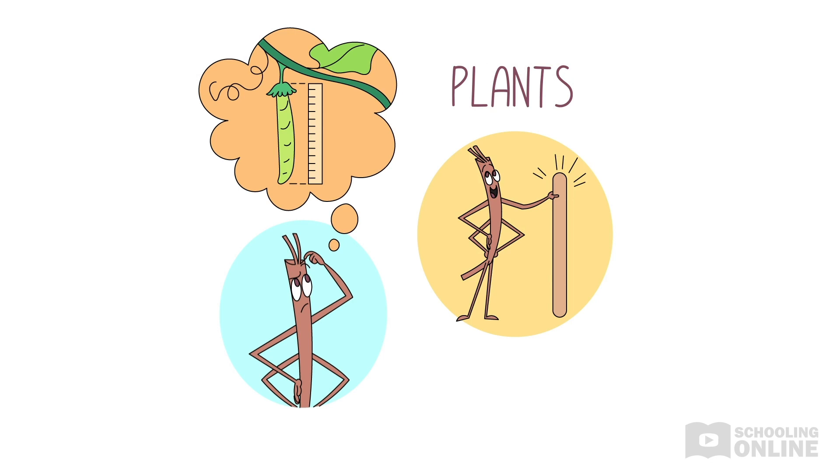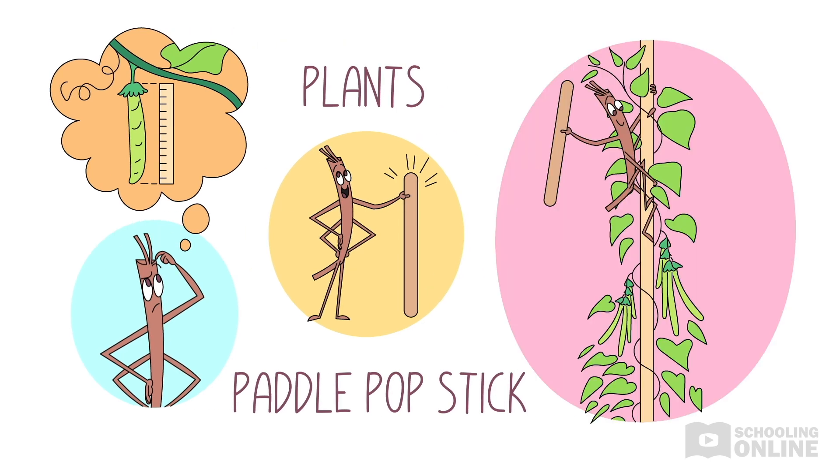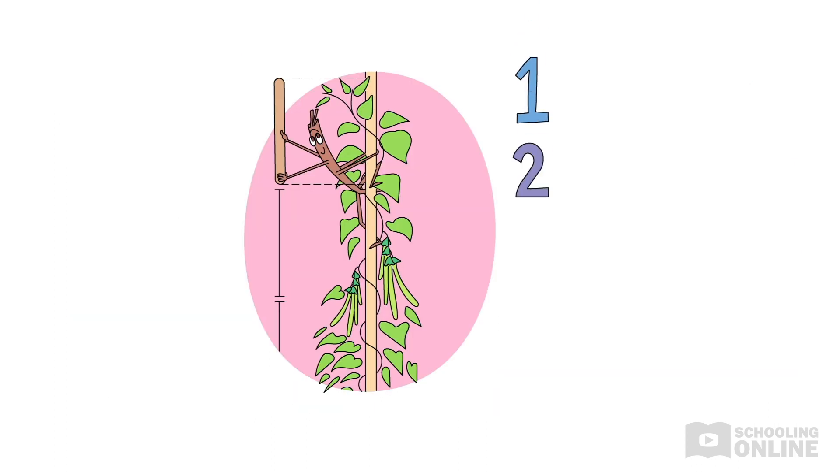Close by, he spots a paddle pop stick. He smiles. Yes, that should do the trick. Holding onto the paddle pop stick, he climbs up the beanstalk very quick. One stick, two sticks, three sticks, four. This plant's growing very tall.